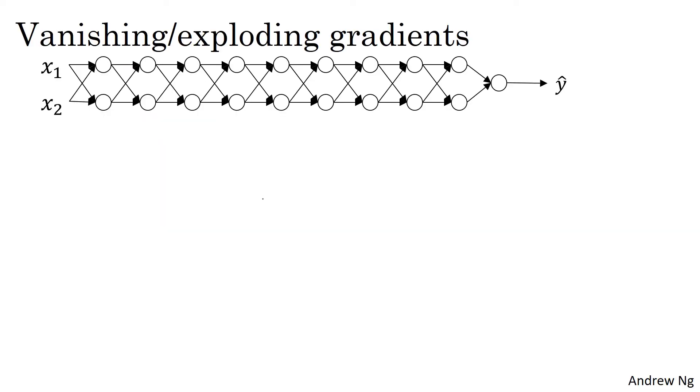Let's say you're training a very deep neural network like this. To save space on this slide, I've drawn it as if you have only two hidden units per layer, but it could be more as well. This neural network will have parameters W1, W2, W3, and so on up to WL.